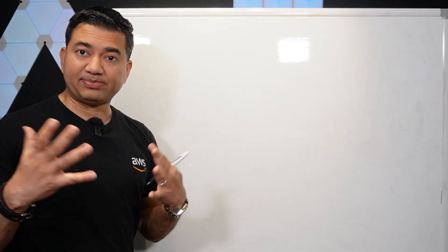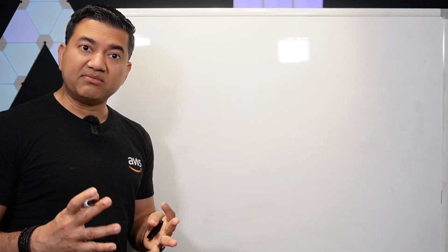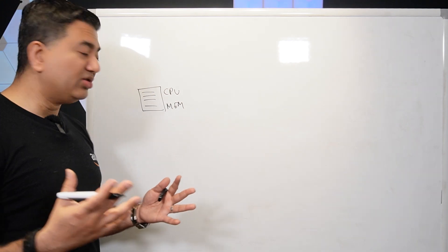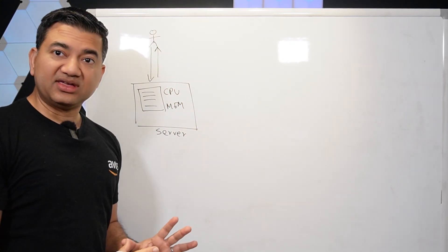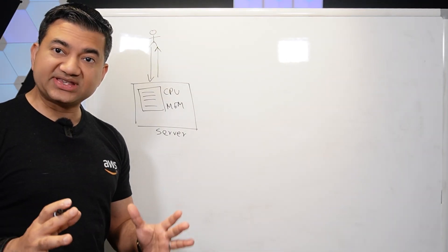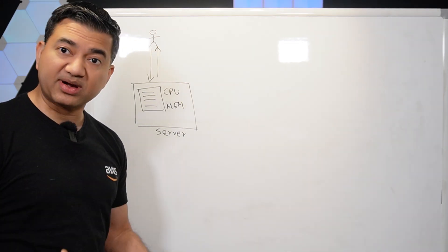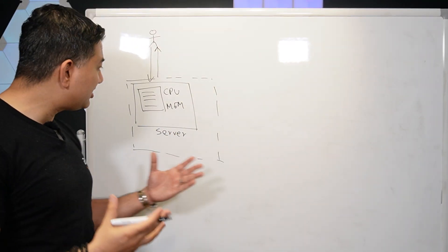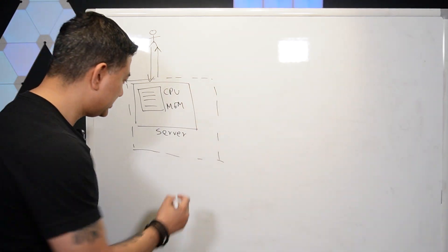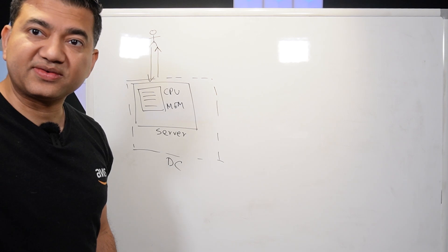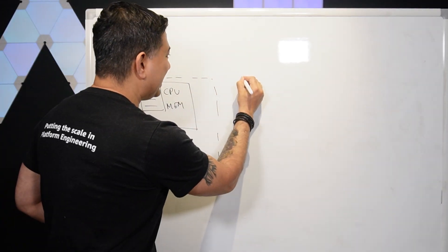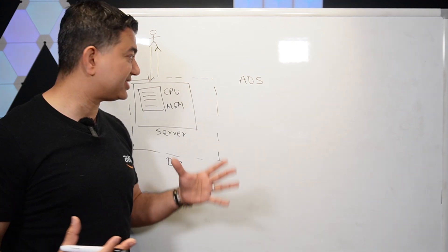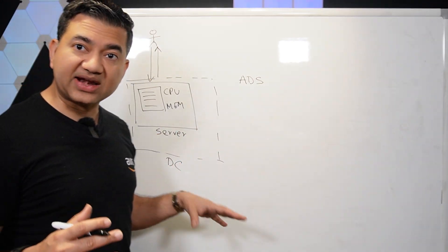In the heart of it all is the application. In any application there is some business logic running in code. To run this application, you need a server running in a data center — and a recent study proved that 85% of workloads are still on premises. So the first set of AWS services you need to know is how to migrate these servers to AWS. The first service is ADS, or Application Discovery Service. It gathers information about what servers are running, including databases.